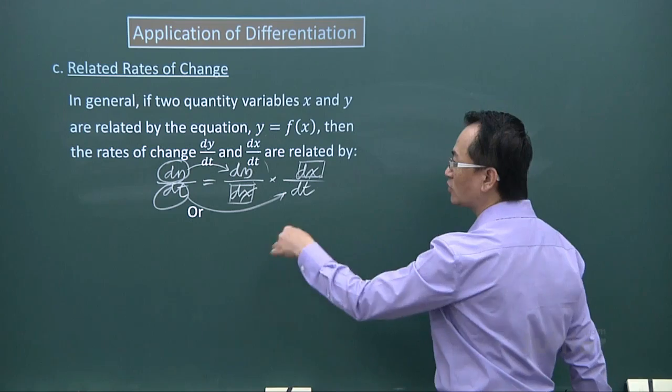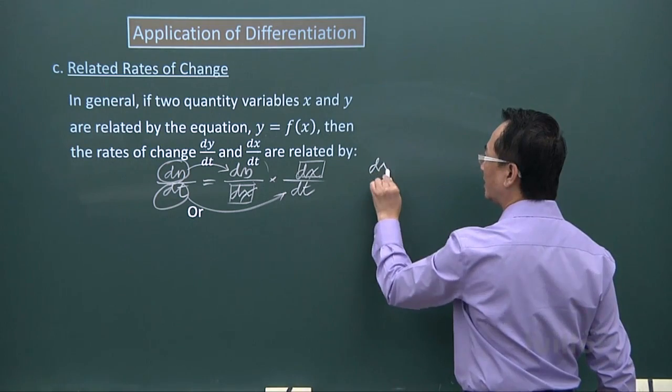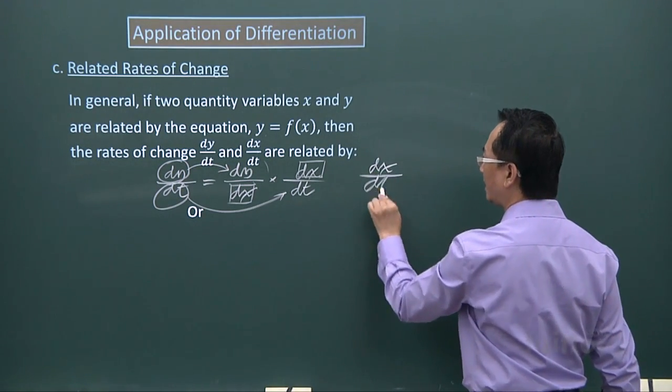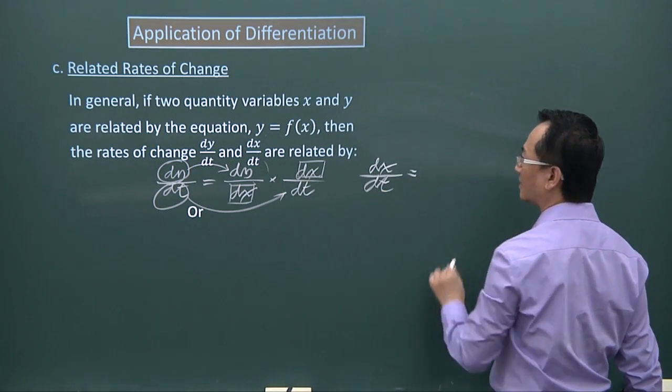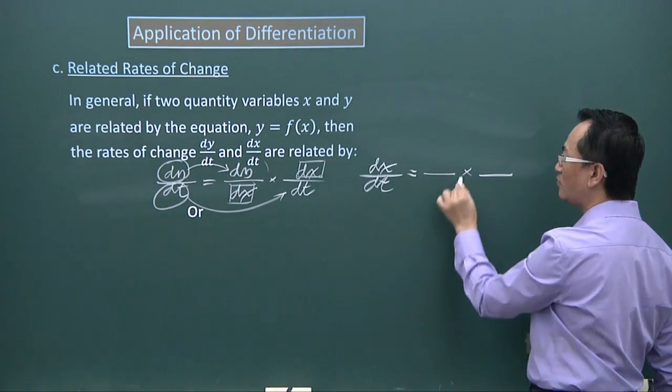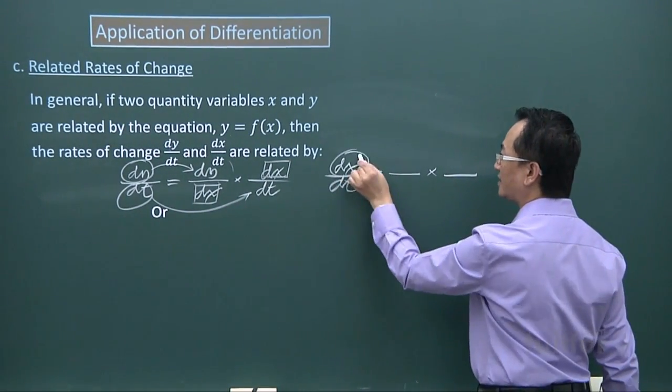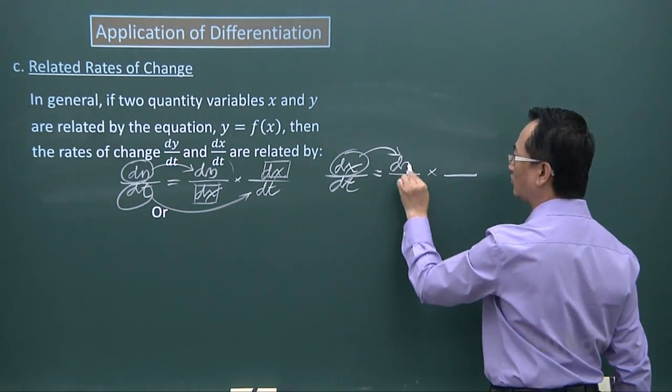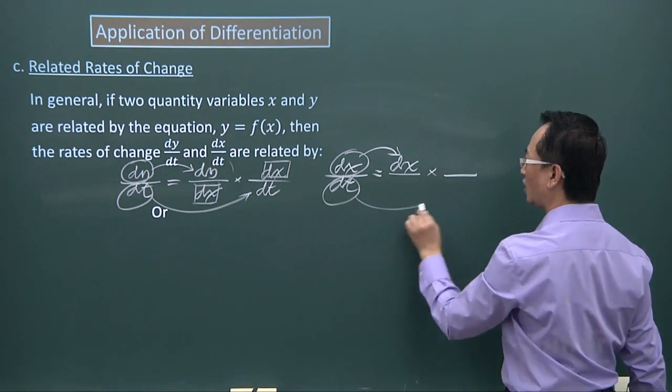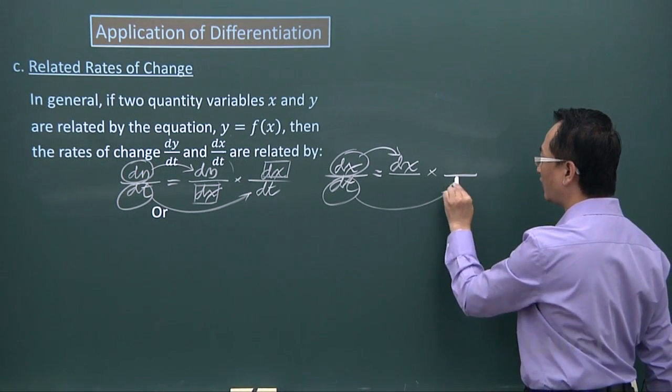Now I can also put it in other form. Like here I can have dx/dt, then you have a symbol multiplied to another symbol. Take dx, put it here. Take dt, put it in the denominator place of another fraction.